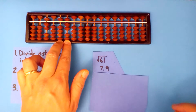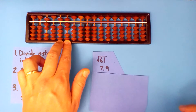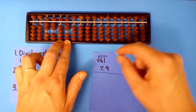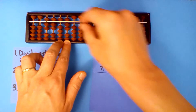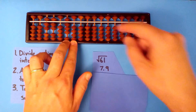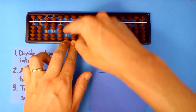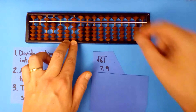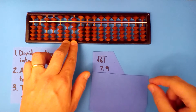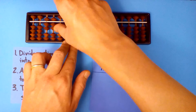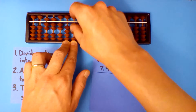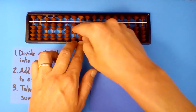7.9 into 57, 7 times. 7 times 7 is 49. 7 times 9 is 63. 7.9 into 17, twice. 2 times 7 is 14. 2 times 9 is 18.